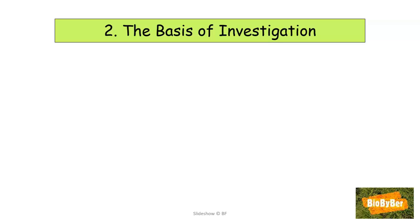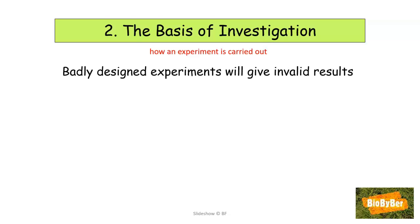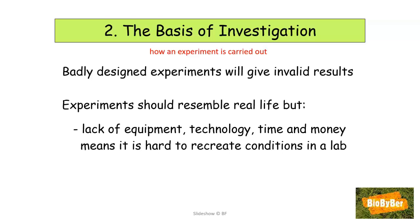Another feature that limits the scientific method is the basis of the investigation — how experiments are carried out. Sometimes experiments are carried out in labs and in petri dishes, and if they are badly designed, the experiments will give invalid results. Experiments should resemble real life, but due to lack of equipment, technology, time, and money, it can be very difficult to recreate real-life conditions in science labs. A lot of cell research is carried out on petri dishes instead of in living organisms, so results might not resemble real life and could give invalid results.